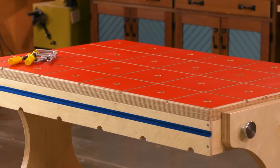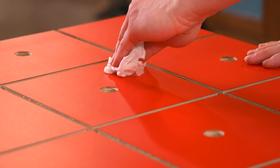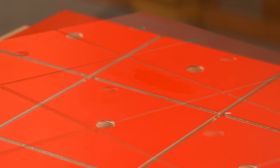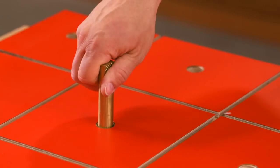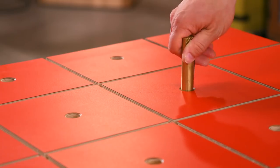The top, or surface A, has a laminate top for hassle-free cleanup. We then went ahead and drilled a number of 3/4 inch dog holes that can accommodate a variety of benchtop clamps.